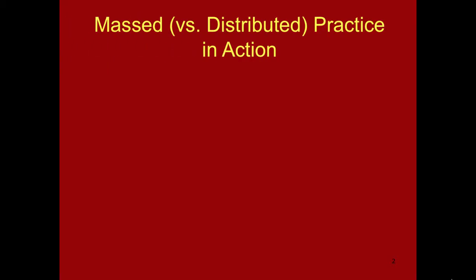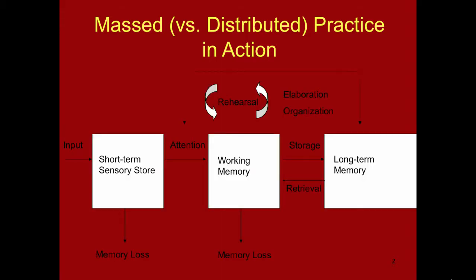What happens in the information processing system if you cram — that is, if you use massed practice? You are literally trying to cram the information into your working memory in hopes that it gets into your long-term memory and you can retrieve it the next day on the exam. But we know that our working memory has a very small capacity and a very short duration, so cramming usually results in cognitive overload.